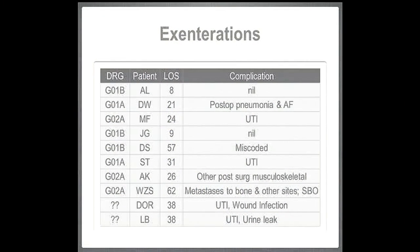We looked at our exenterations — these are horrendous operations where we remove everything in the pelvis. The problem is there is no code for an exenteration. G-categorised codes cover rectal resections with or without complications. Some exenteration patients got out remarkably quickly with no complications, but some stayed 62 days or 38 days, and that's where we've made applications to get additional funding.